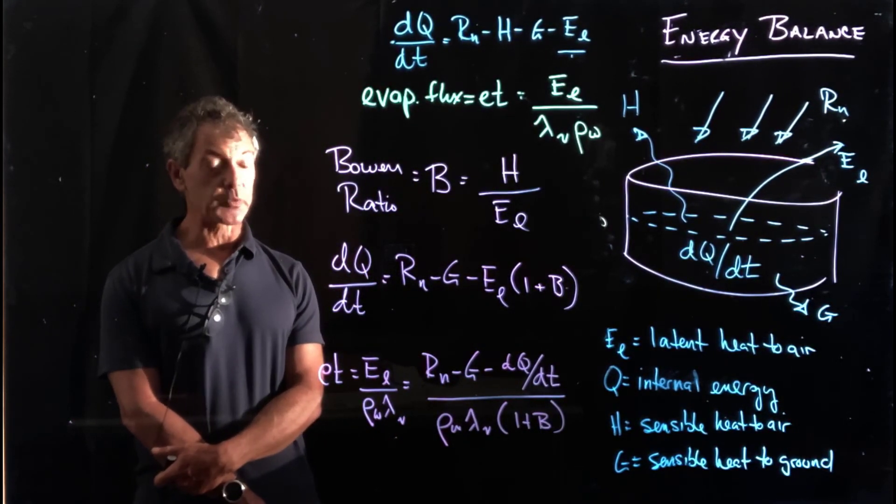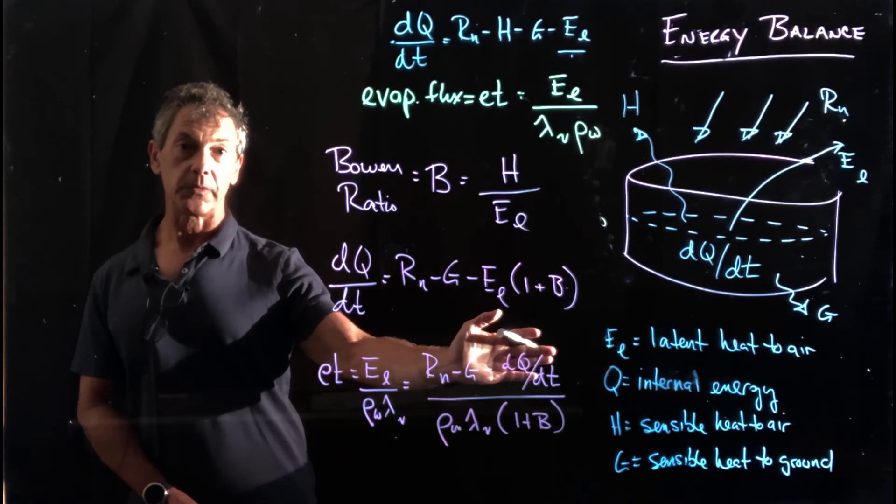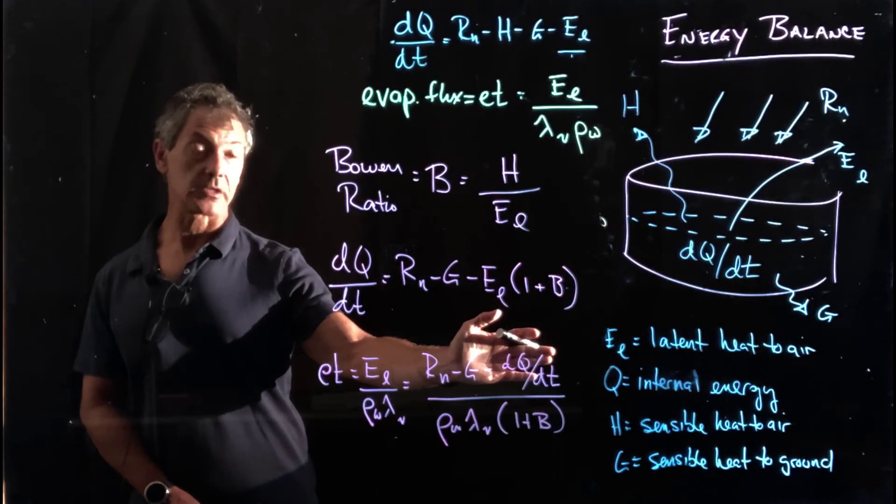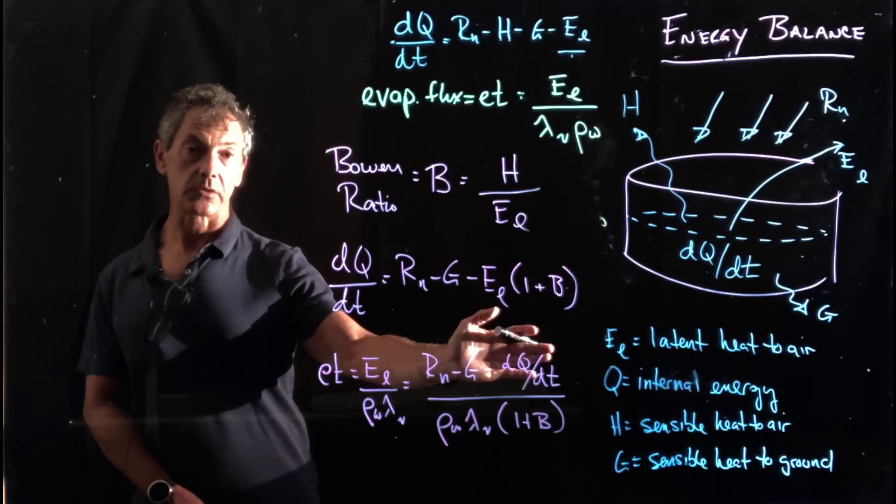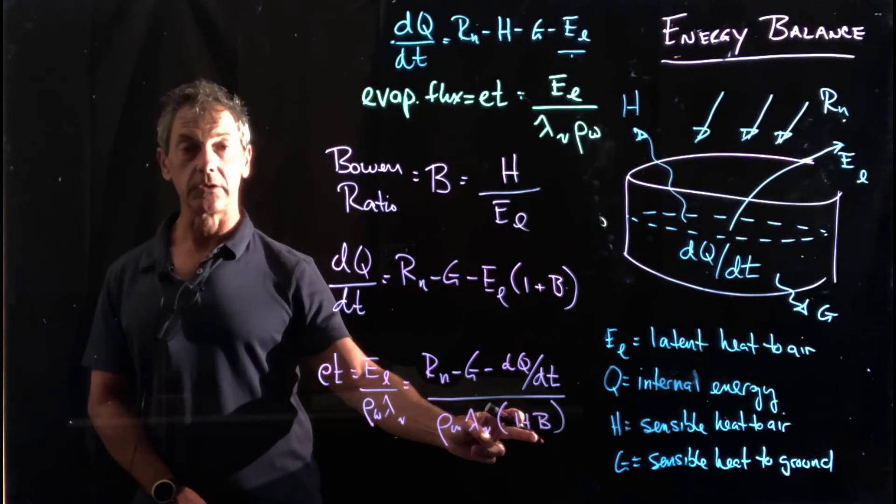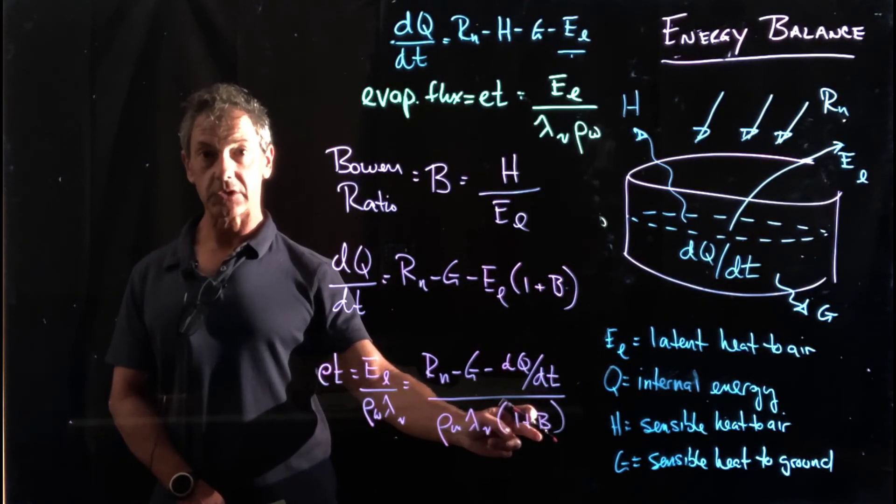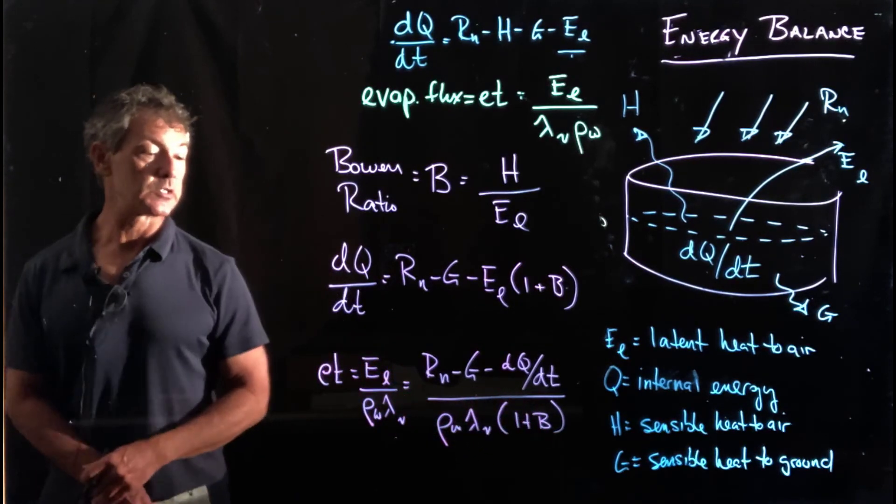So it looks pretty similar to our radiation balance if we ignore these two terms. If we ignore the sensible heat transfer to the ground and the change in storage, in other words assume steady state, except now we're still including the sensible heat transfer to the atmosphere using the Bowen Ratio.